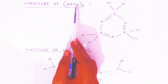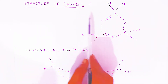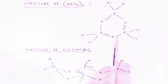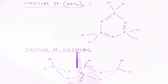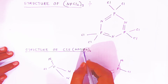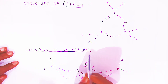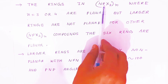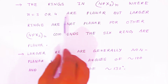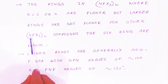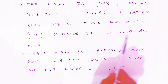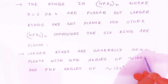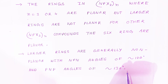The structure of hexachlorotriphosphazene shows phosphorus connected to two chlorine atoms each, with phosphorus-nitrogen double bonds and phosphorus-nitrogen single bonds. In a ring NPX2 where n is 3 or 4, the rings are planar, but larger rings are not planar. For the 6-membered rings, NPN angles are 120 degrees and PNP angles are nearly 132 degrees. Larger rings are generally non-planar.